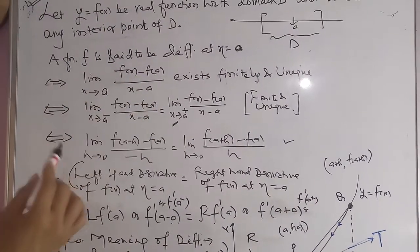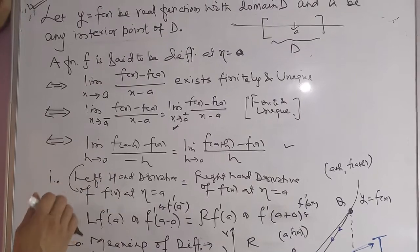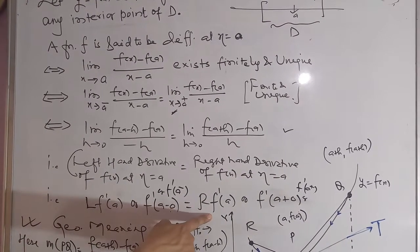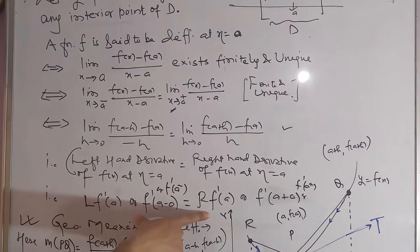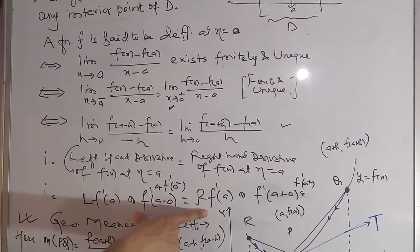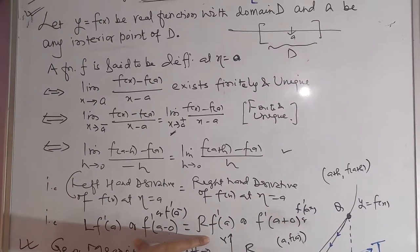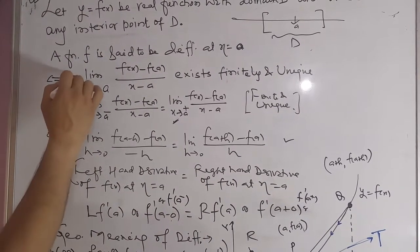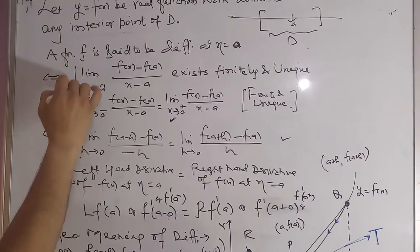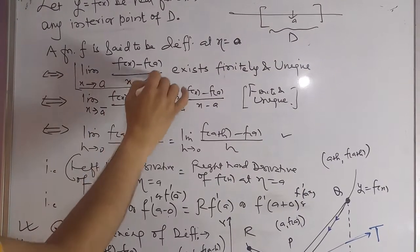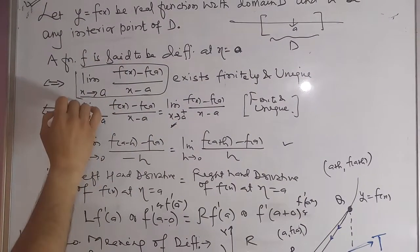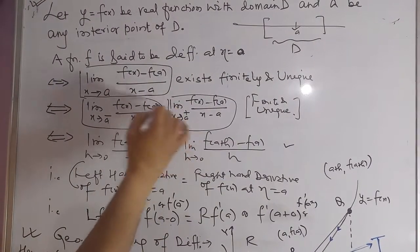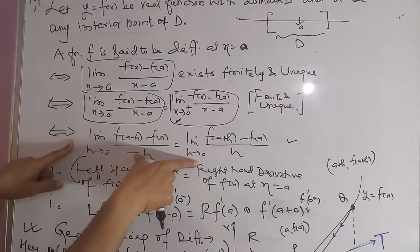A function is differentiable at x equal to a means the left-hand derivative at a equals the right-hand derivative at a, and both should be finite and unique. To check differentiability at a point, we use either the limit formula or the LHD and RHD formulas.